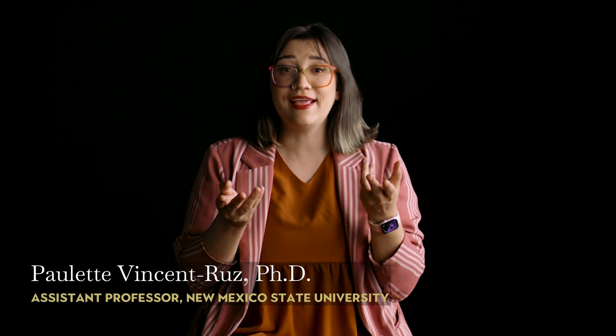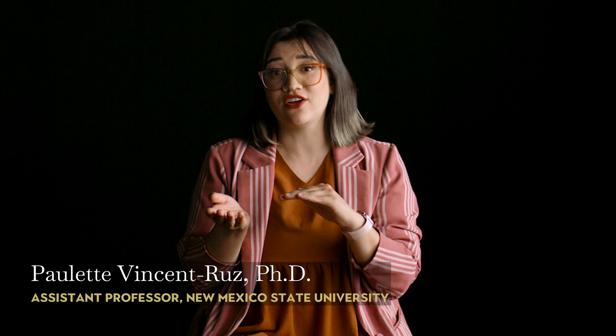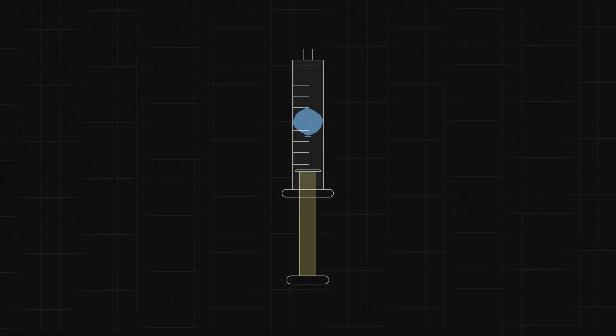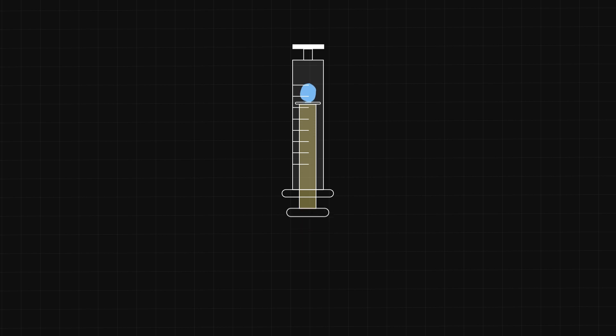Experiments show us that the gas volume goes down as the pressure in a container goes up. We can demonstrate this today by using a large syringe with a small balloon inflated inside. If we block the end of the syringe off and force the plunger in to increase the pressure inside the syringe, the balloon gets smaller.